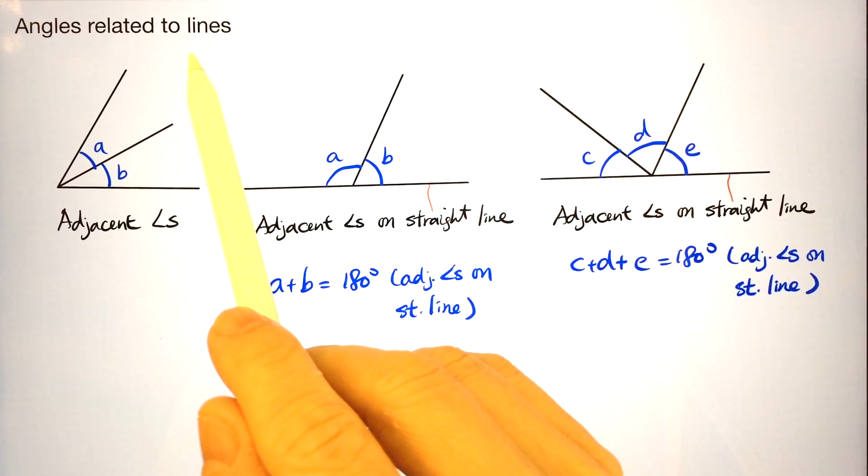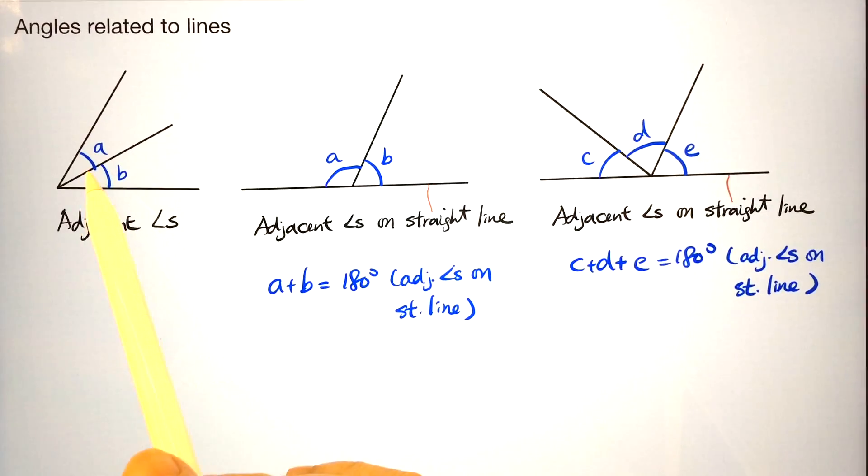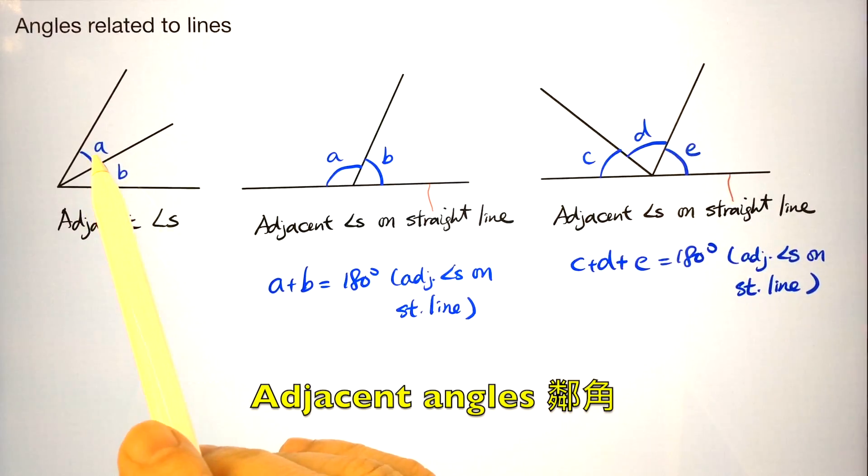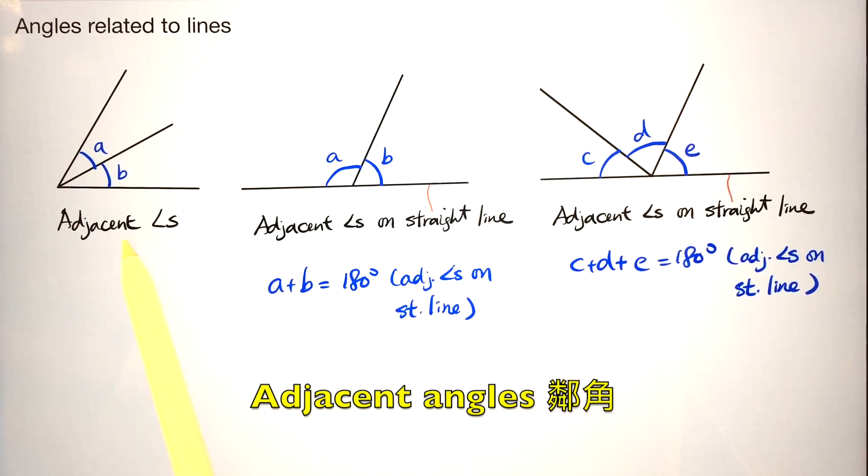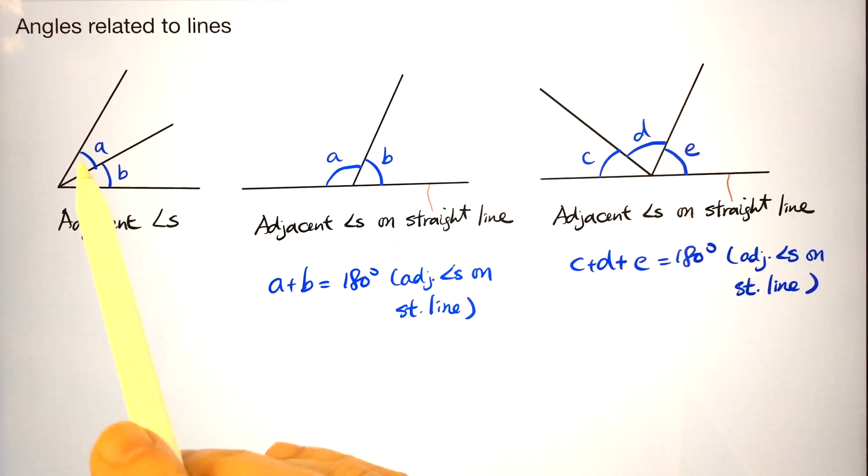Angles related to straight lines. First of all, we look at this type of adjacent angle. A and B are two angles adjacent to each other. Therefore, we call them adjacent angles.